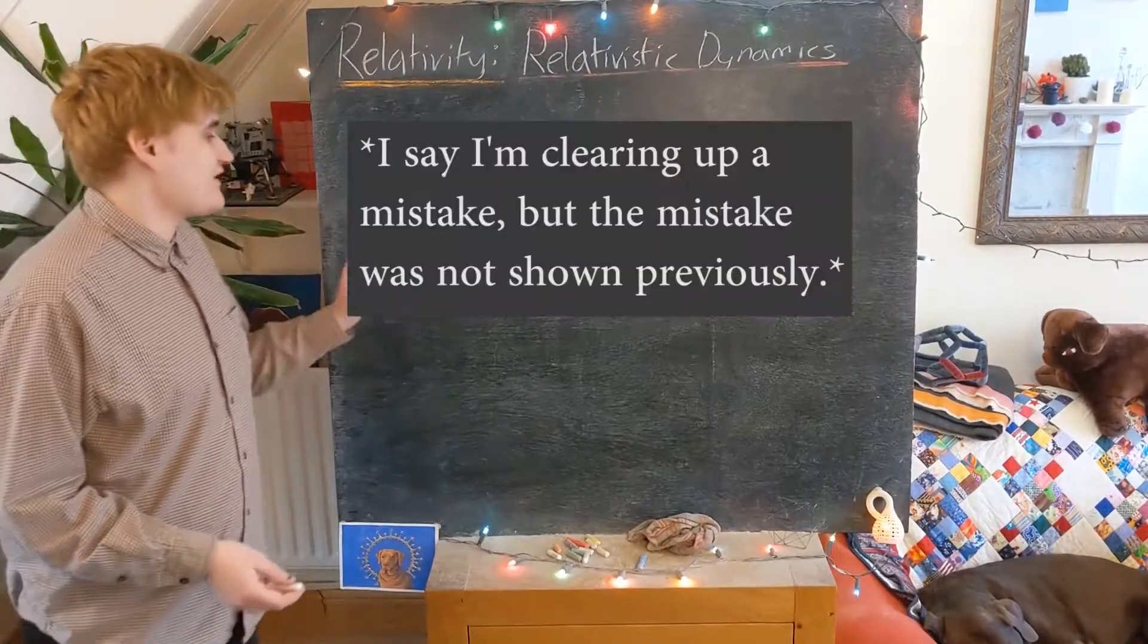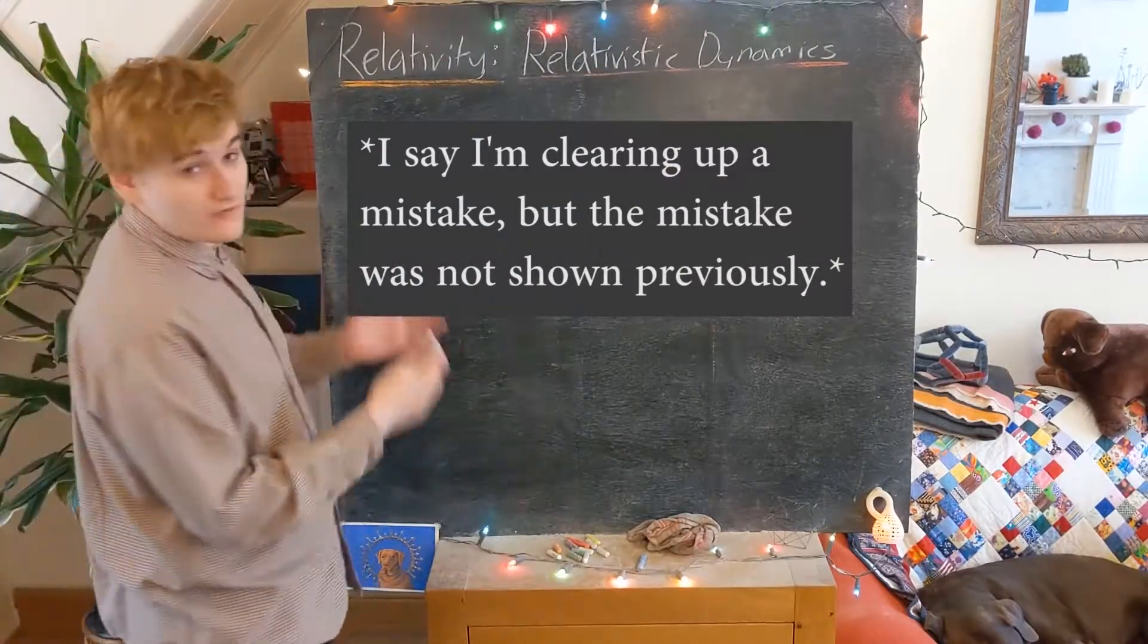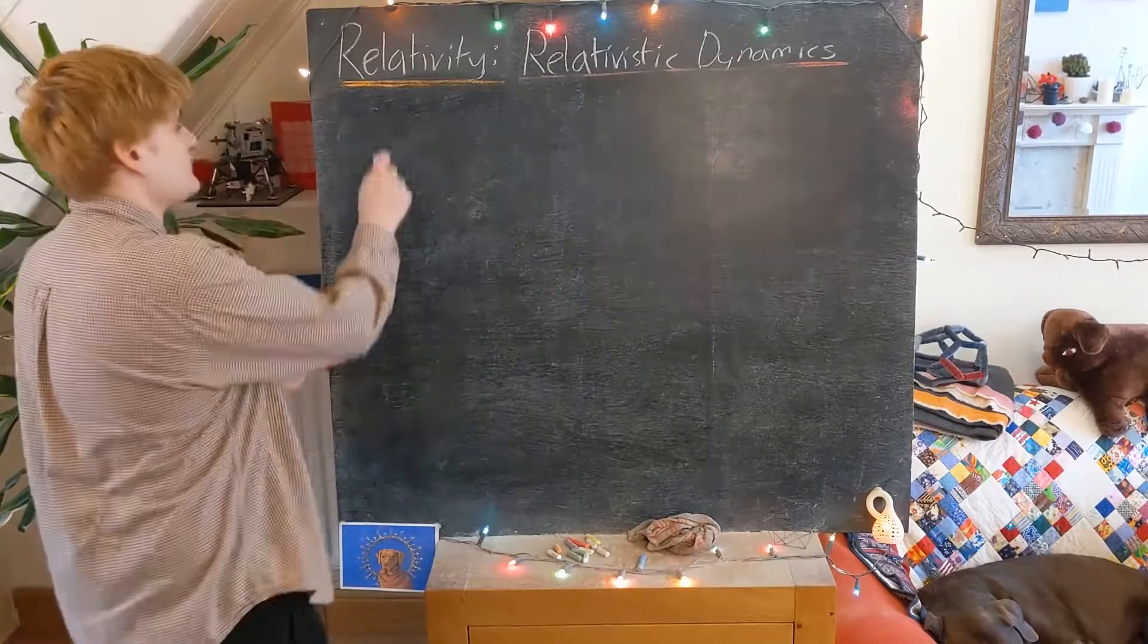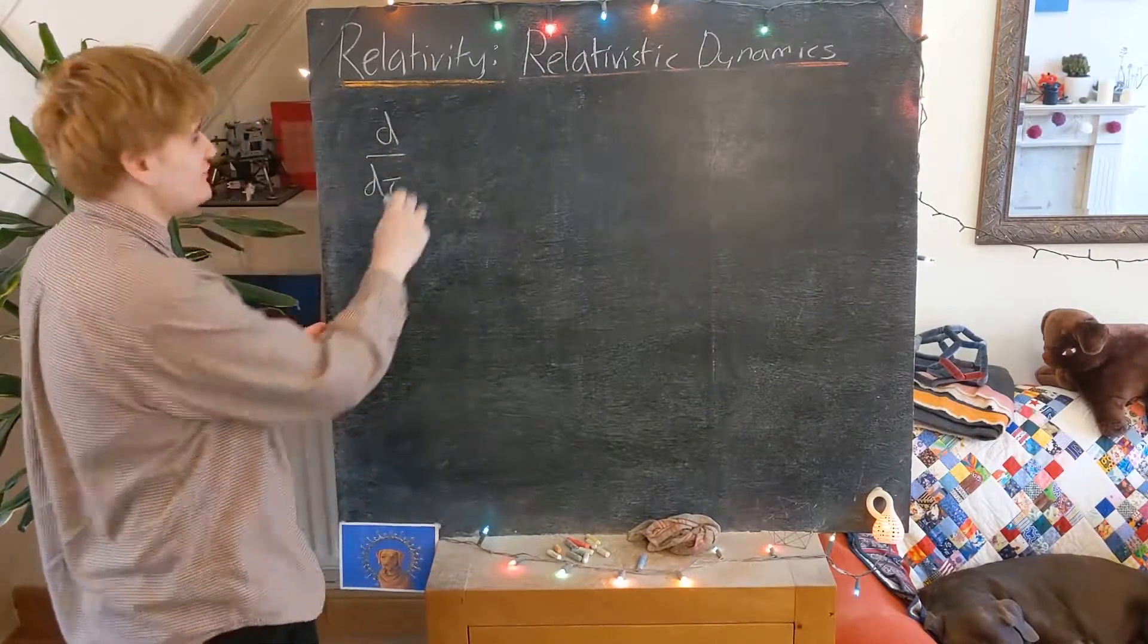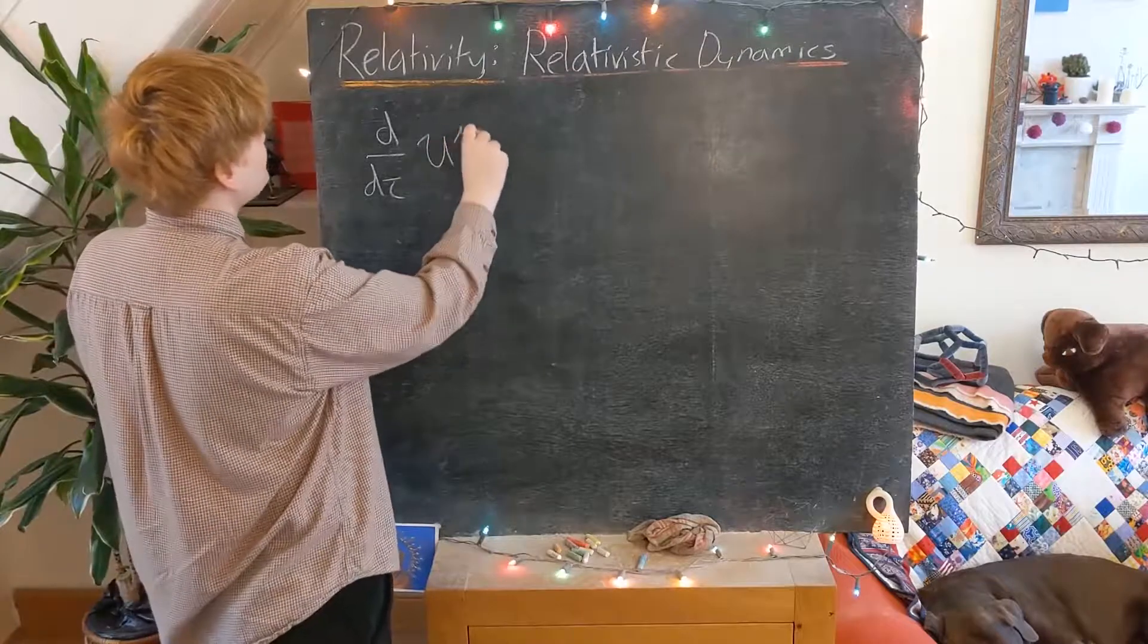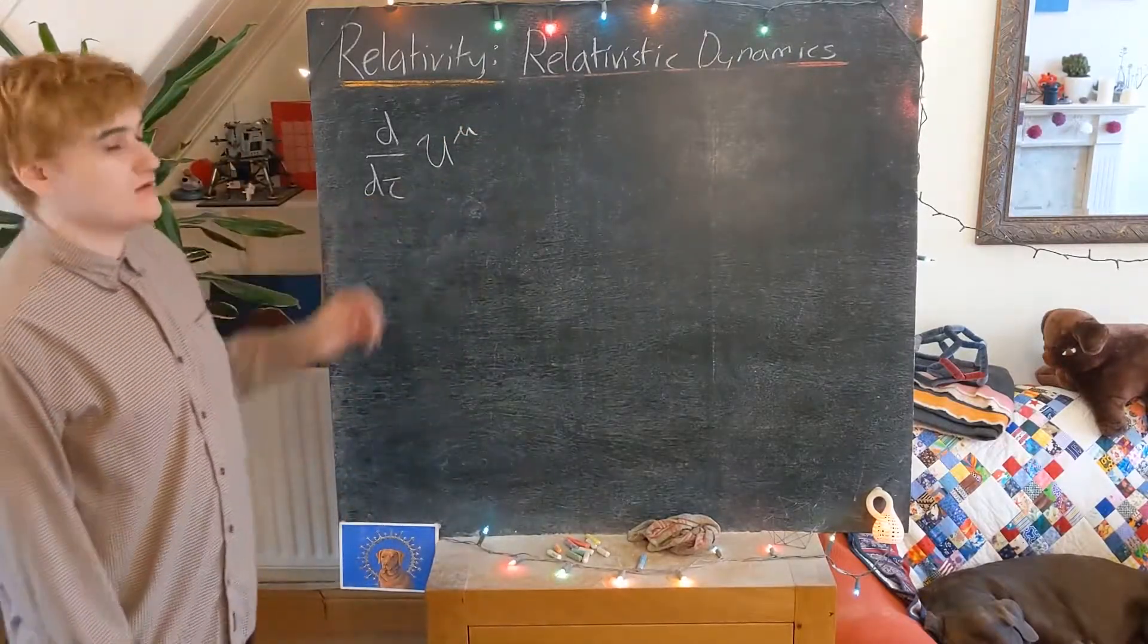So I just want to clear up a mistake I made when I was deriving the 4-acceleration, which we said was this tau derivative of our 4-velocity, or now just the second tau derivative of our world line.